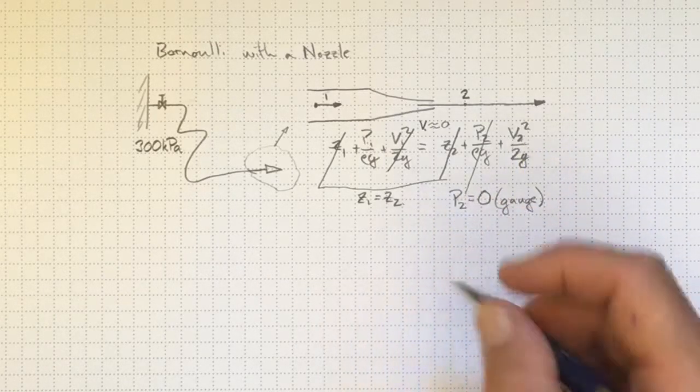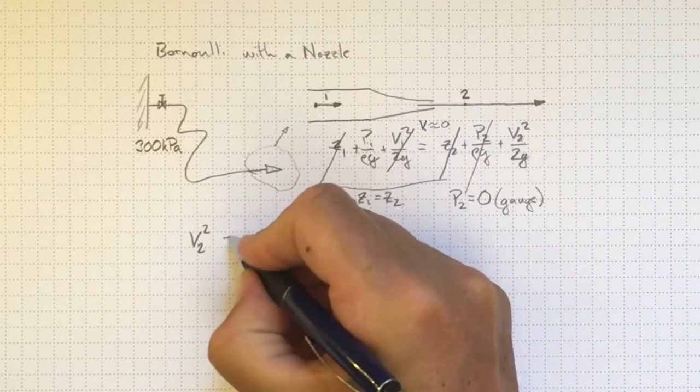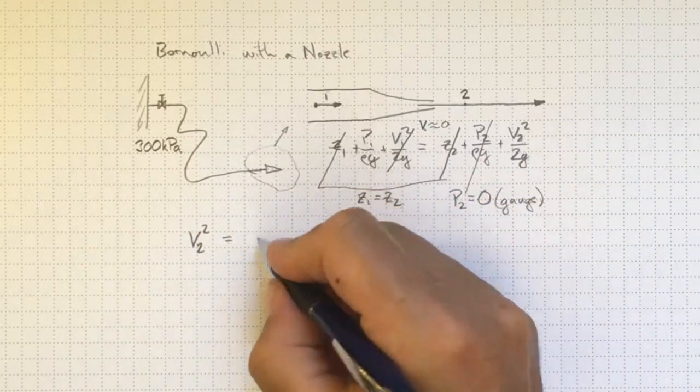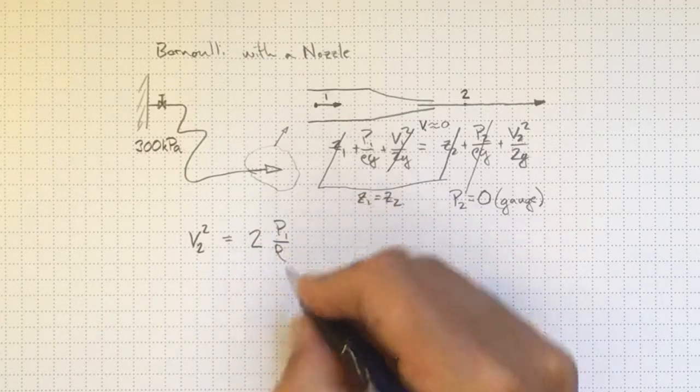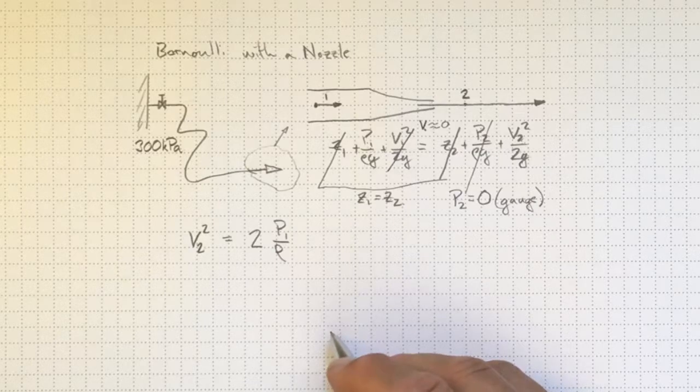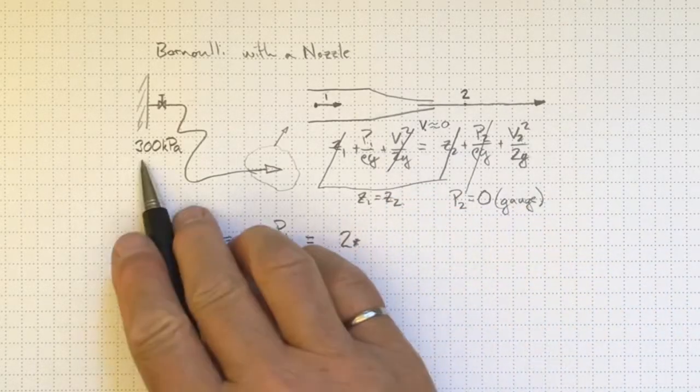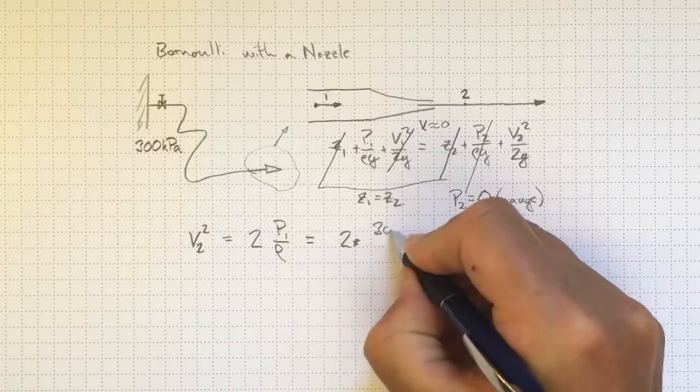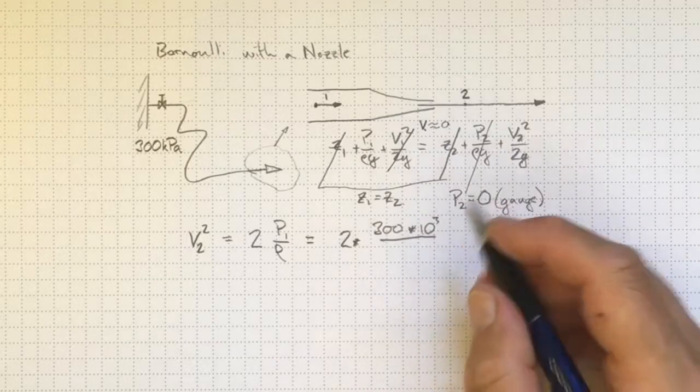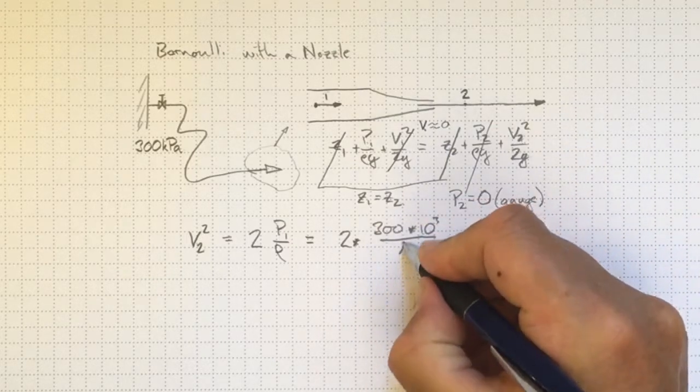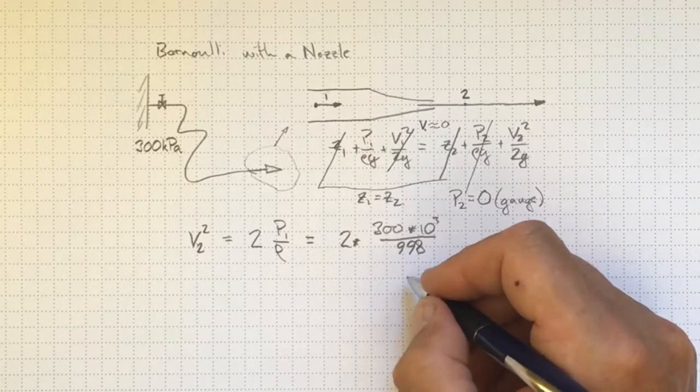So rearranging, we'll get v2 squared equal to 2 times p1 over rho, because the g's will cancel out. That'll be 2 times 300 kilopascals, that's 300 times 10 to the third, divided by density. Density of water at 20 degrees C is about 998 kilograms per cubic meter.